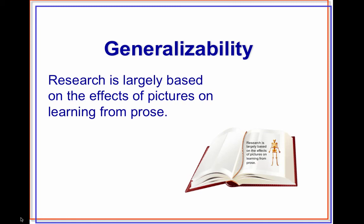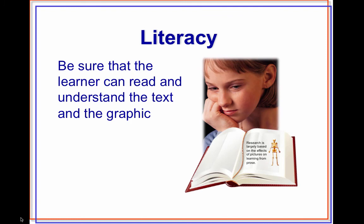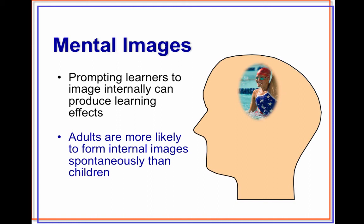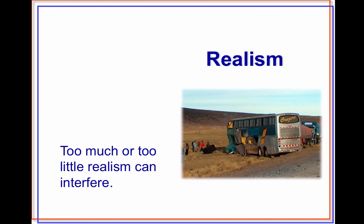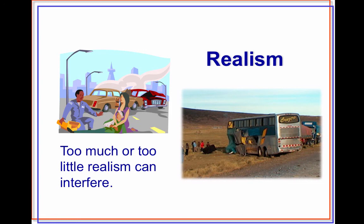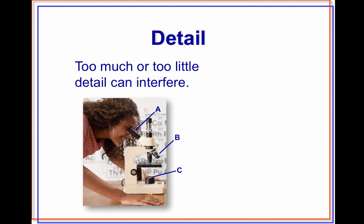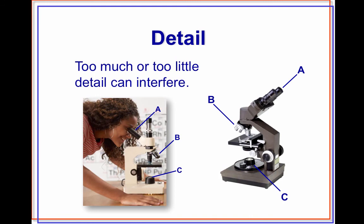Generalizability: research is largely based on the effect of pictures on learning from prose, so be sure the learner can read and understand both the text and the graphic. Mental images: prompting learners to image internally can produce learning effects. It has long been known that athletes use imaging to help see themselves as successful, and adults are more likely to form internal images spontaneously than children. Realism and detail also matter — too much or too little of either can interfere with learning.